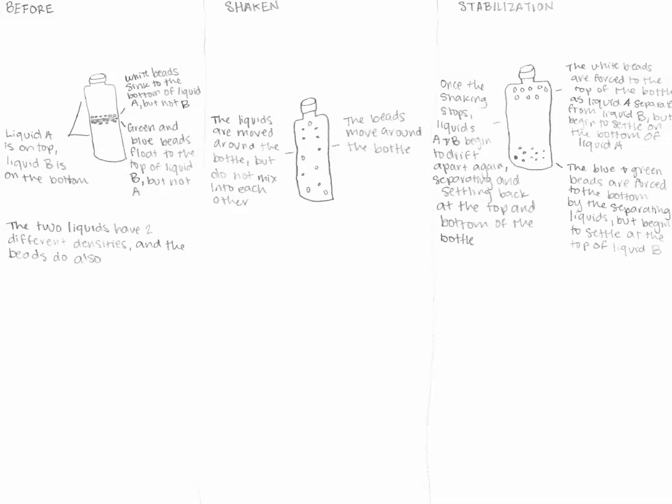Here's a model that offers a little bit more explanation. It starts to include a term you've probably thought about in looking at the beads and the way they behave in density. This model is describing the two types of liquids and the two types of beads, and then going on to explain the relationship as you move from before, shaken, to a stabilized mode with the demonstration.